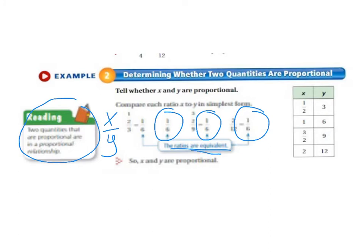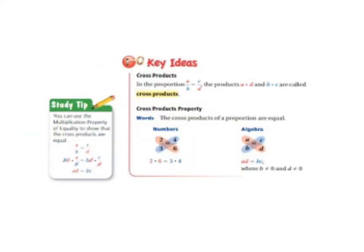So all of these ratios are equivalent because when you simplify them they equal the same thing. So they are proportional. Now I want you to take a moment and write this in your notebook.